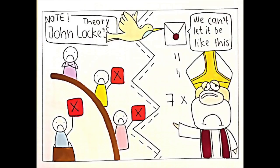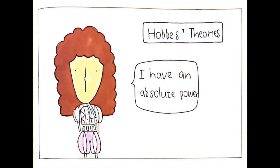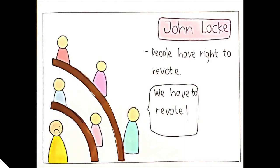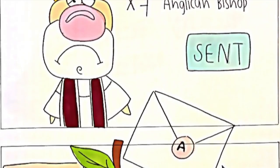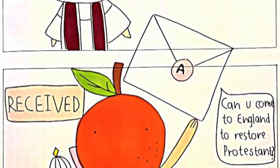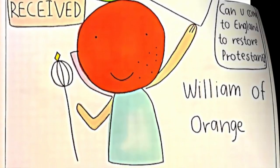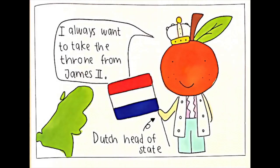They ended up revolting. James II may have been influenced by Thomas Hobbes' ideologies, which held that the King must have absolute power and others have to follow. This revolt may also have been influenced by John Locke's ideologies, which stated that people have the right to revolt or rebel in order to make the government and the citizens reach an agreement. The seven Anglican bishops took action by sending an invitation letter to William of Orange, inviting him to come and be their new king. William of Orange, who was the Dutch head of state, had always wanted to overthrow James.